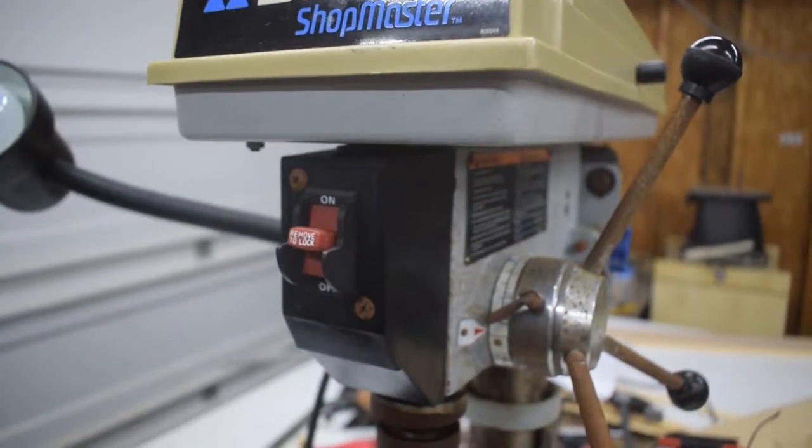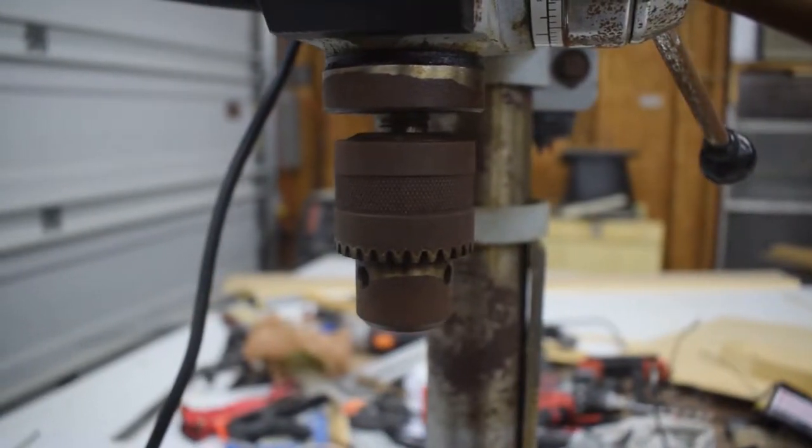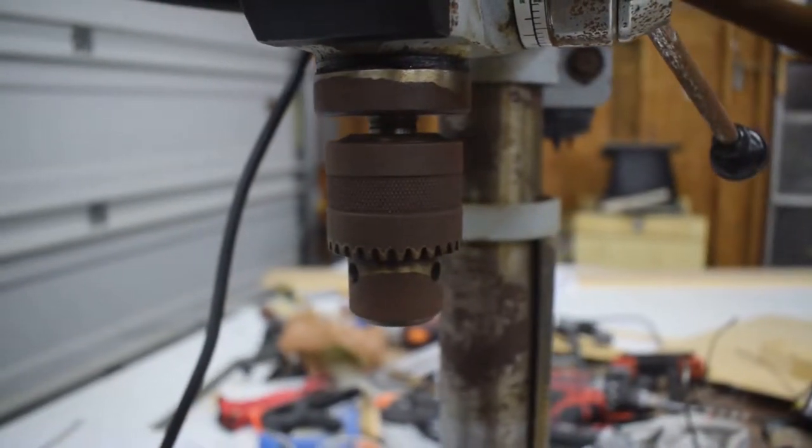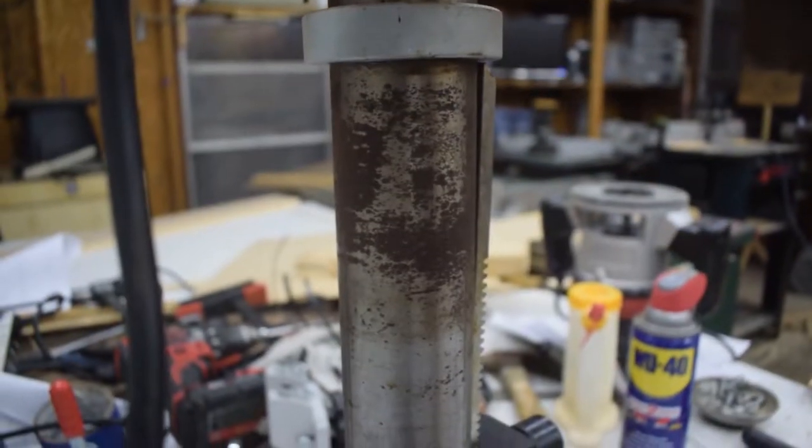I recently got this drill press from my dad and it was sitting out in the rain when I picked it up, so needless to say it had quite a bit of rust on it when I got it home. I think it might have had rust on it before because it was stored out in a shed.